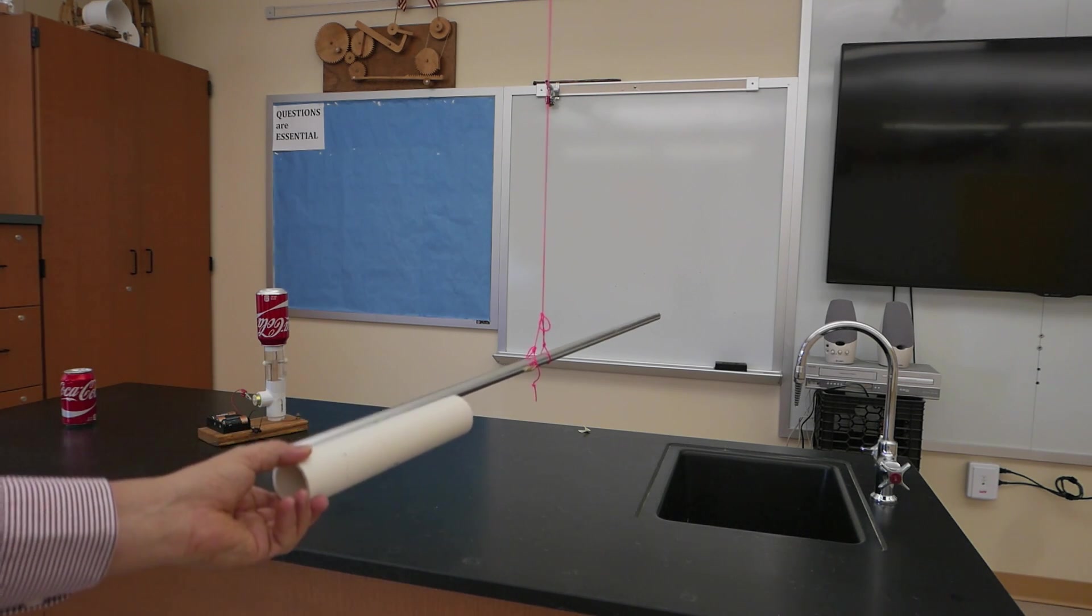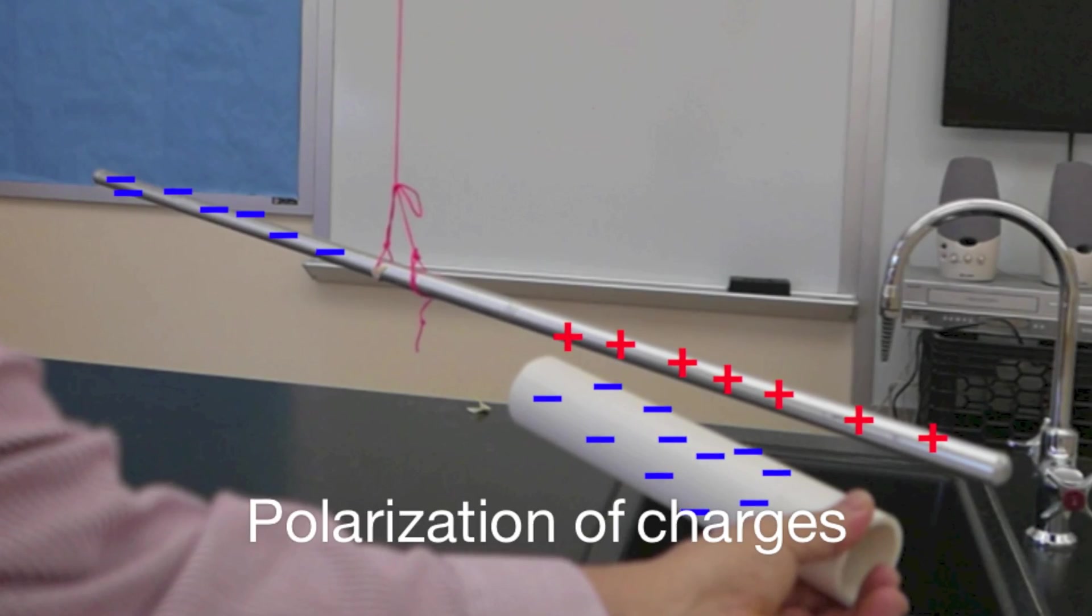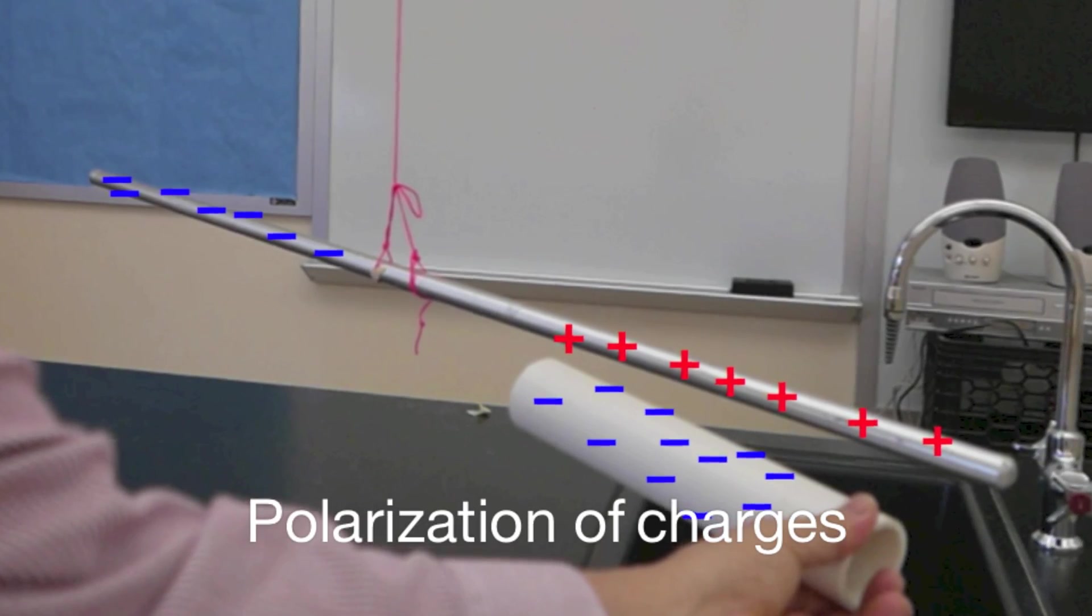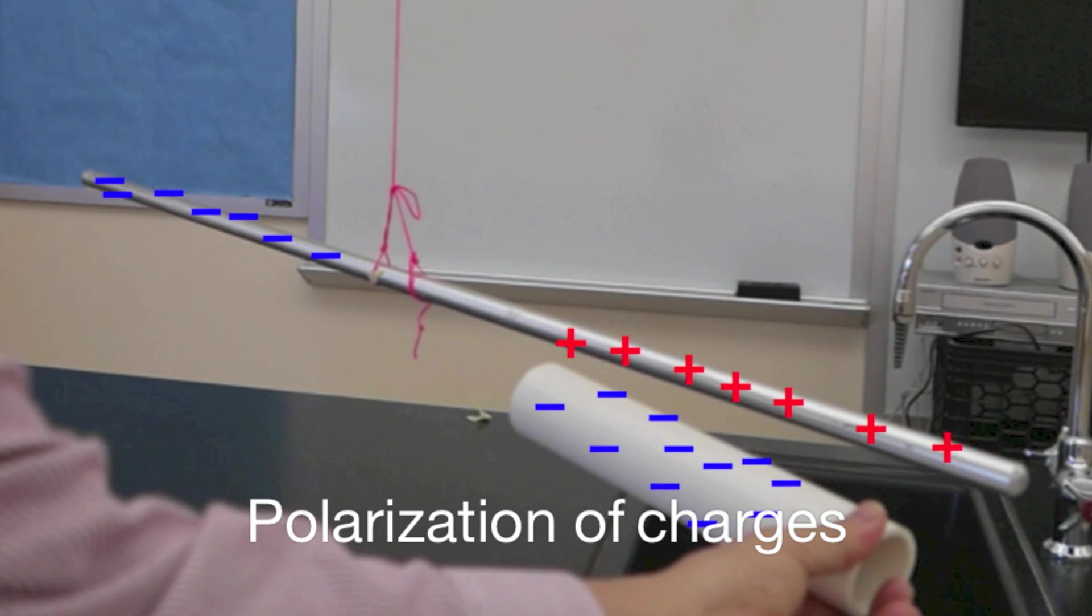So during this process of induction, the PVC pipe is causing a polarization of the charges on the pole. Now it's not changing the amount of charge on the pole, simply causing the electrons to move to the opposite end.